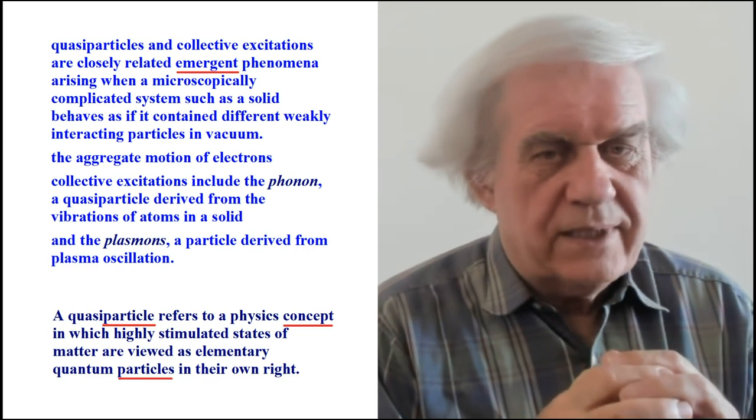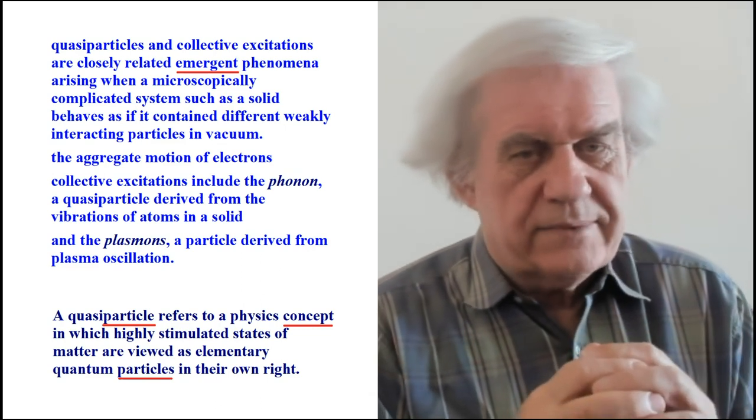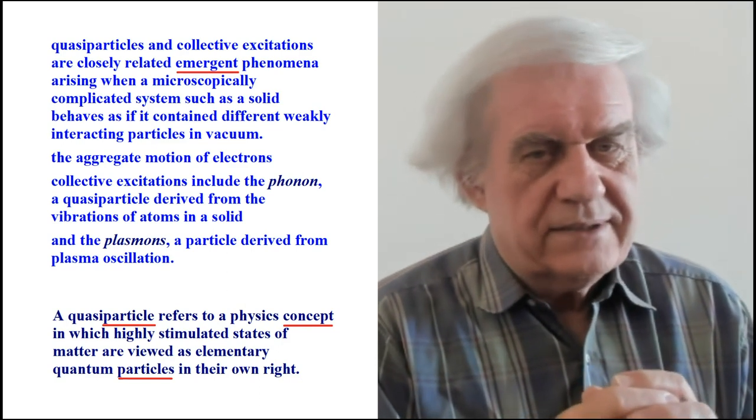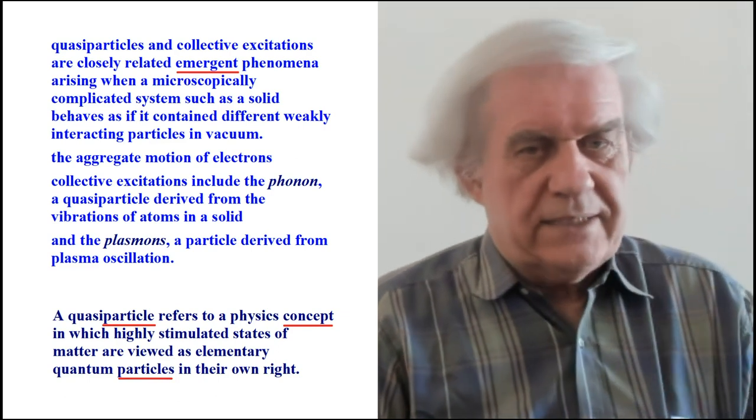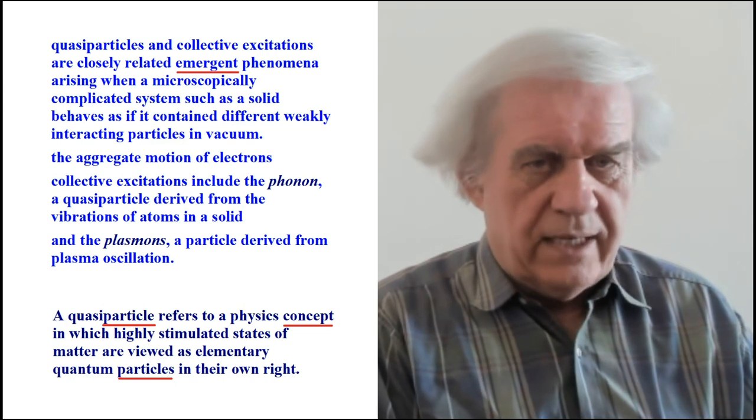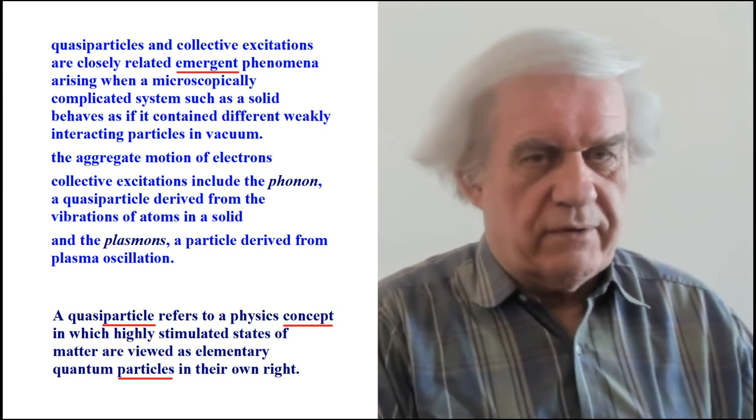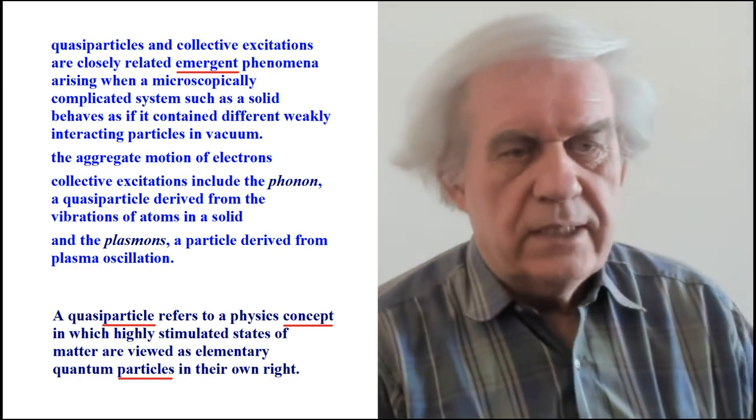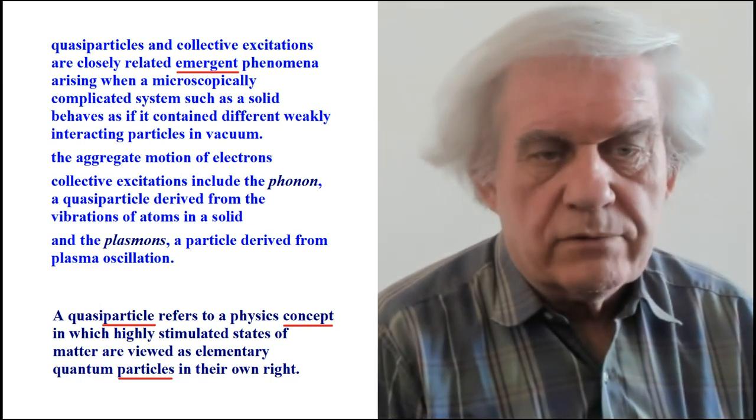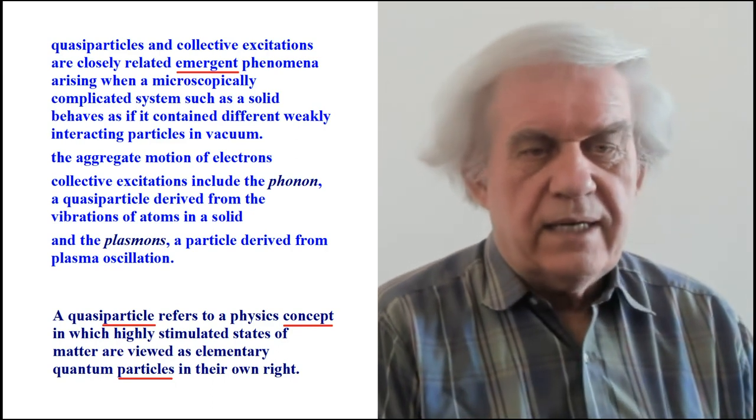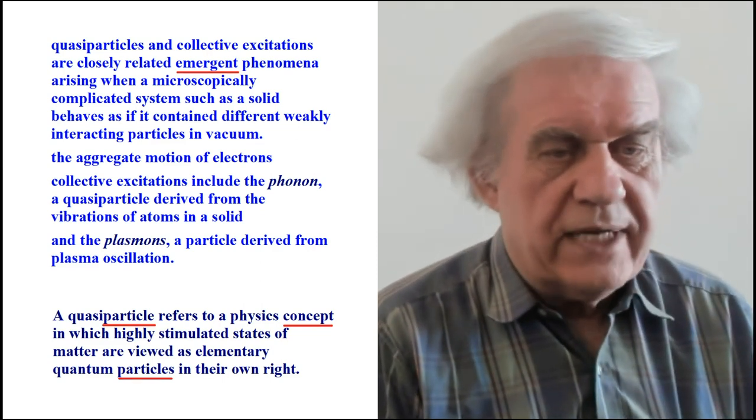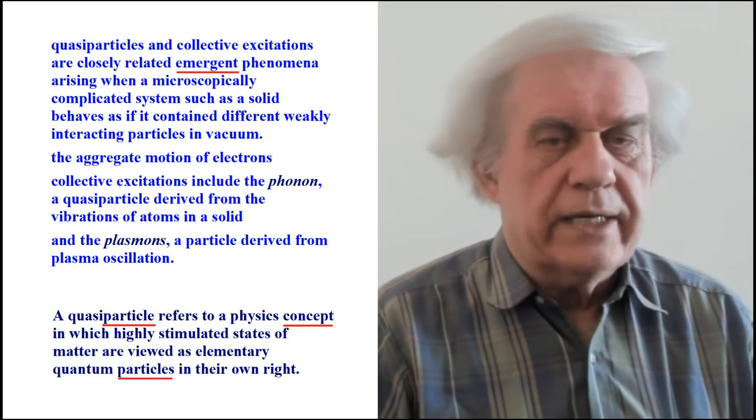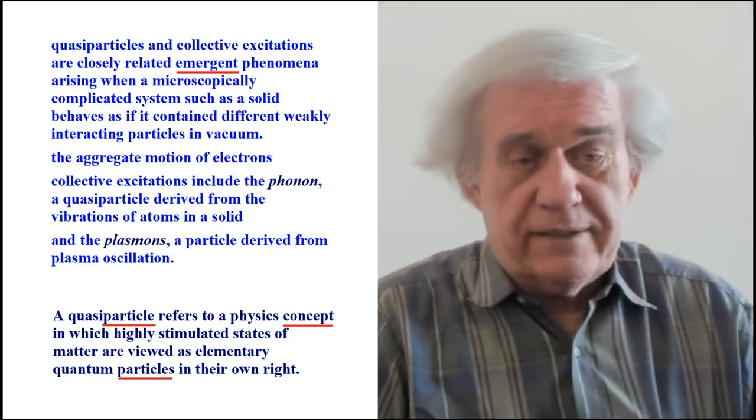It's like you're saying, what is a table? Well, a table is all these atoms and the electrons are moving within atoms, so a table is a bunch of moving electrons. No, no, that's not what a table is. A table is what I point to. That's called a table. But, see, these people are turning concepts, dynamic concepts, into a physical object. They're saying that this movie is a photograph called a quasiparticle. And, another source says a quasiparticle refers to a physics concept, a concept is a particle, in which highly stimulated states of matter are viewed as elementary quantum particles in their own right. Again, they're turning a concept, they're telling you right in your face that they're turning this concept into an object, into a thing, into a particle.